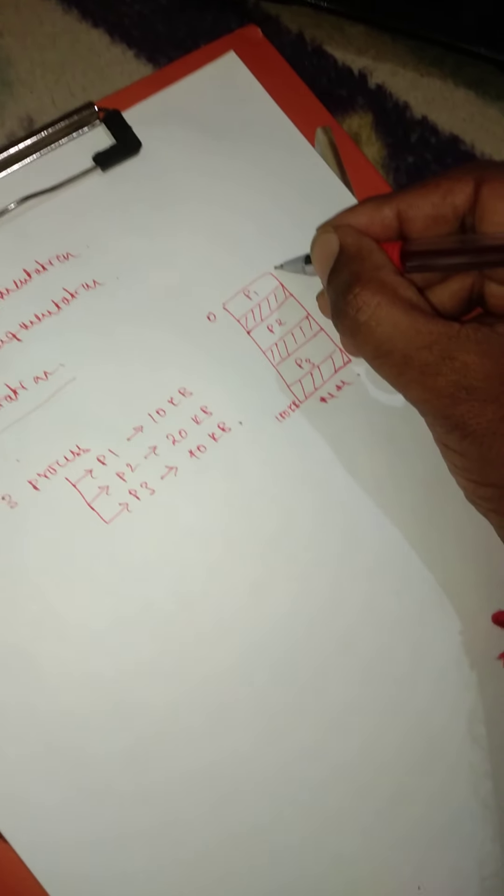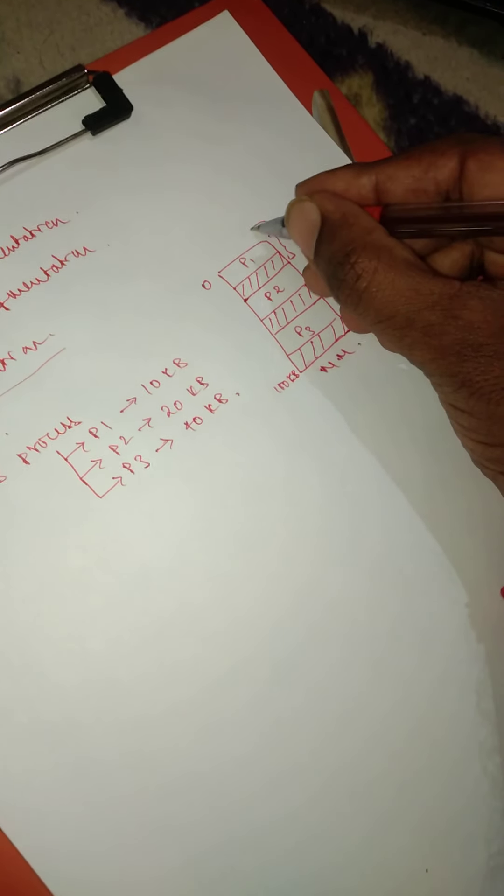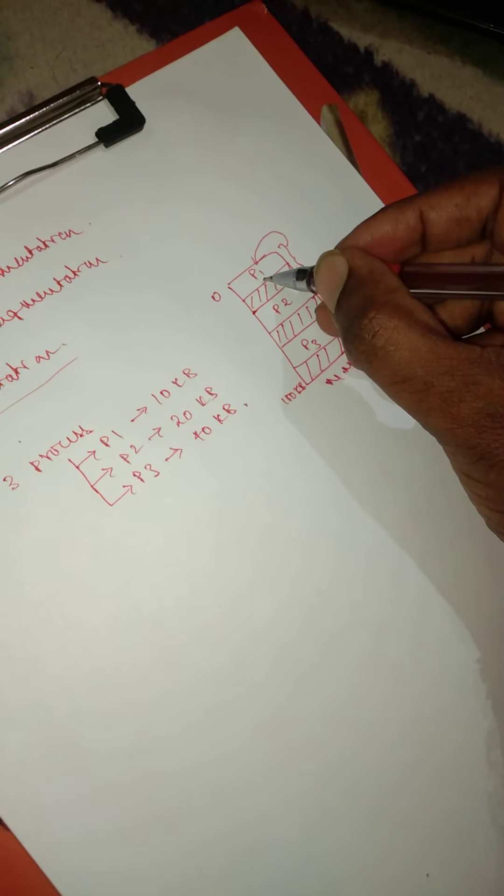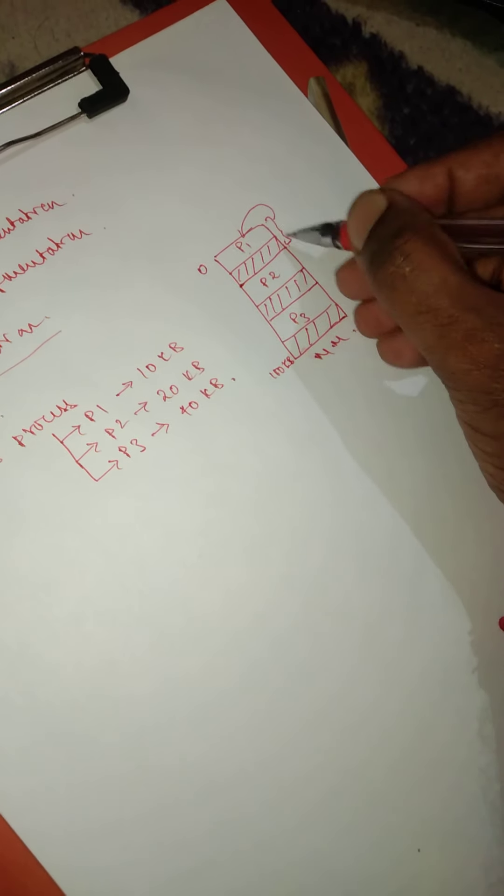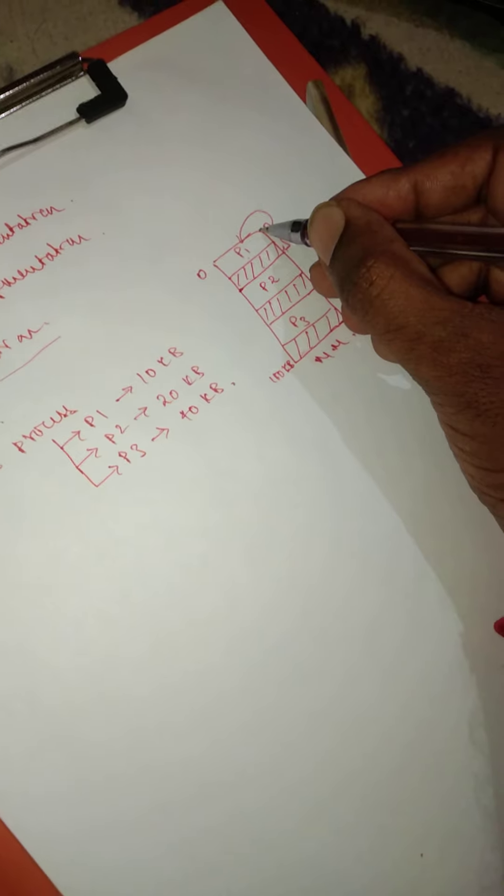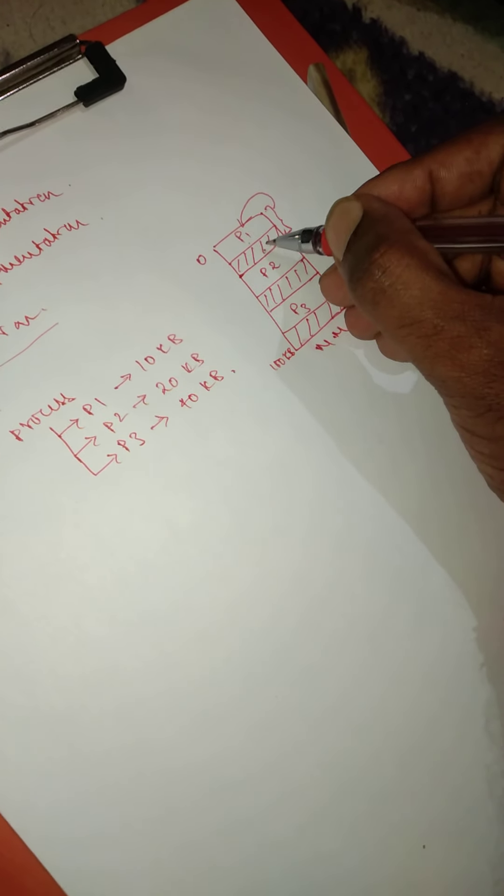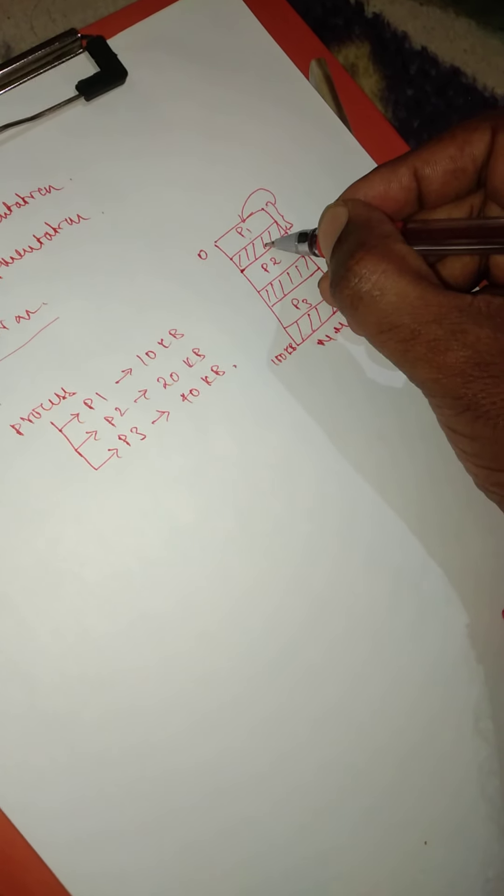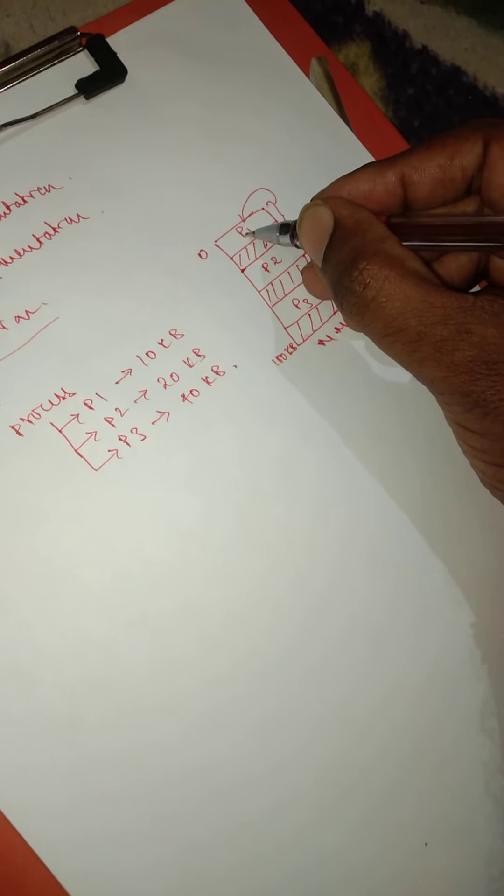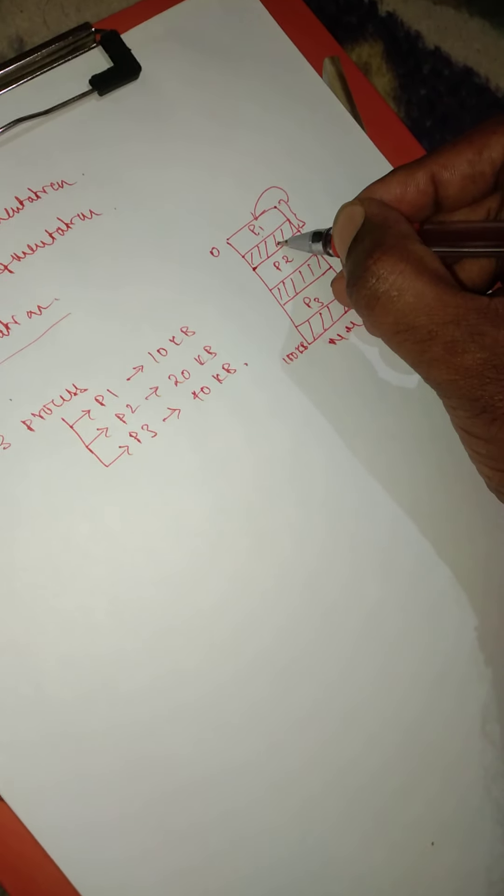Now the internal fragmentation states that this much amount of memory is given to P1, but P1 is not utilizing the entire memory space given to it. Therefore, the memory or this shaded memory is part of P1, but P1 is not utilizing this memory.